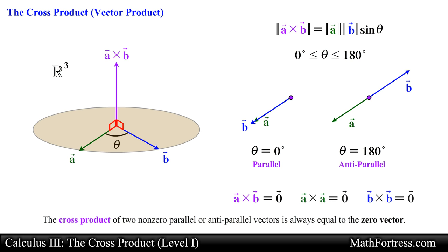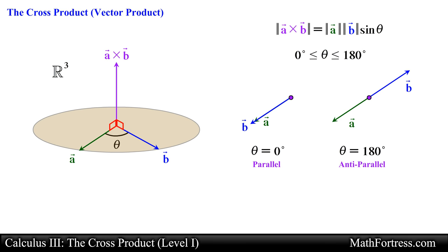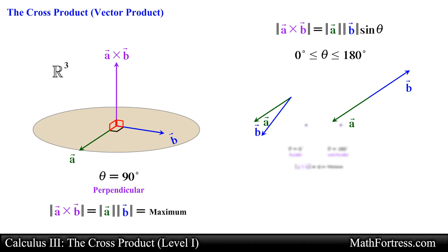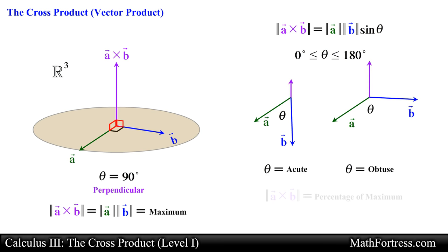In particular, the cross product of any vector with itself is also equal to the zero vector. We will formally prove these properties in a later video. When vector a and vector b are parallel, the magnitude of the cross product will be 0 — that is the minimum. When vector a and vector b are perpendicular, the magnitude of the cross product will be a maximum.